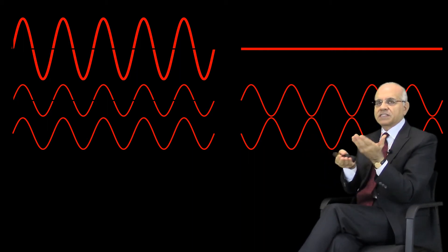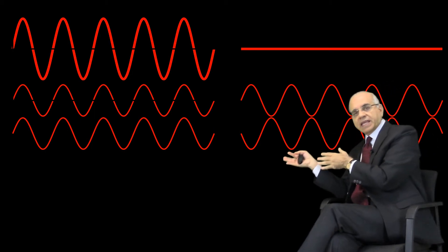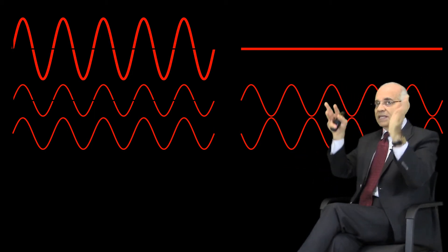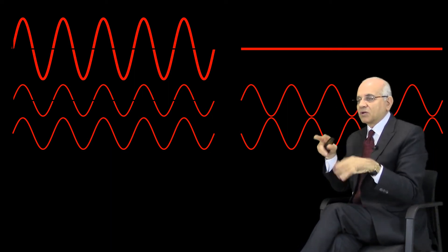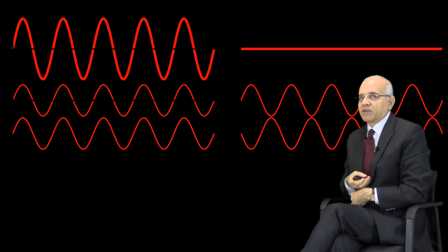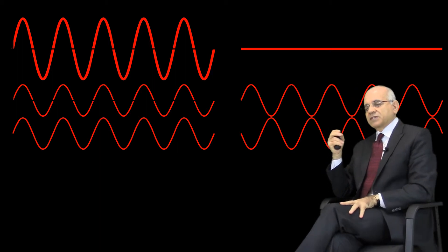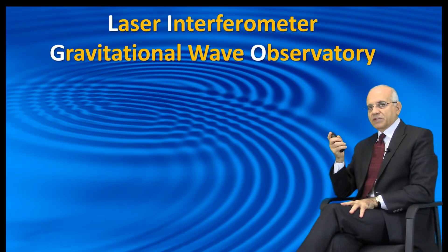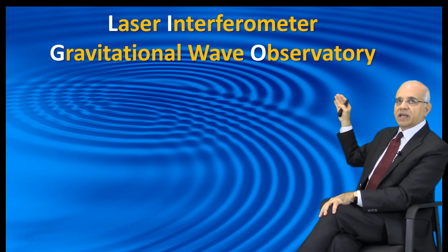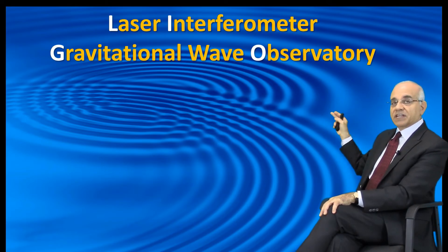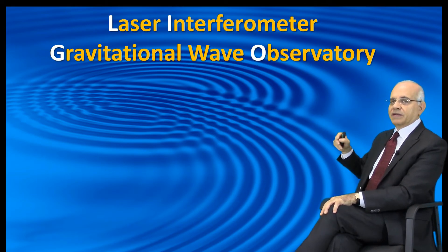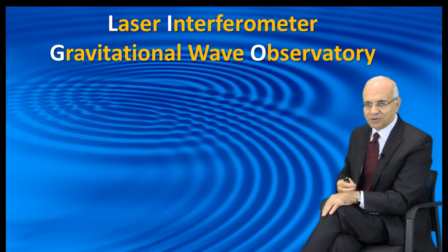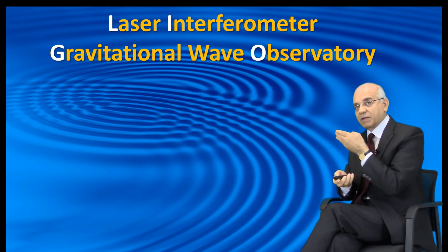And there will be other kinds of interference in the middle, where they're not completely canceled or completely joined together — they're not completely in sync. So they may produce different kinds of waves with different amplitudes. That's called interference. Now you understand Laser Interferometer Gravitational Wave Observatory, abbreviated LIGO — because that's just too long to say.